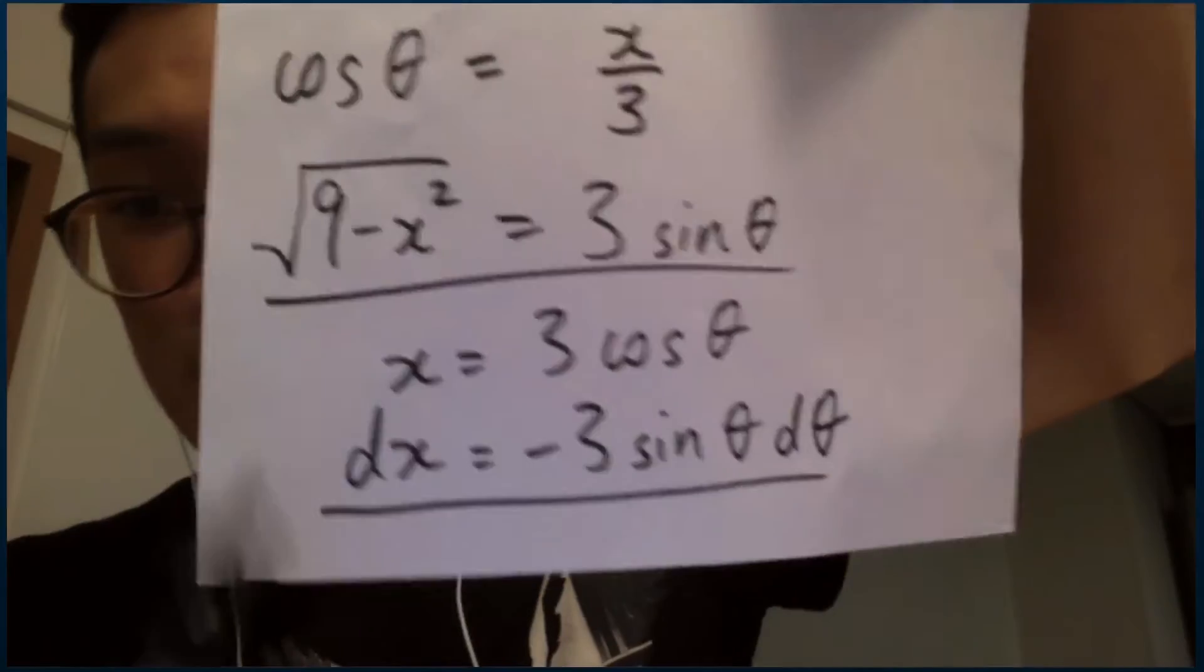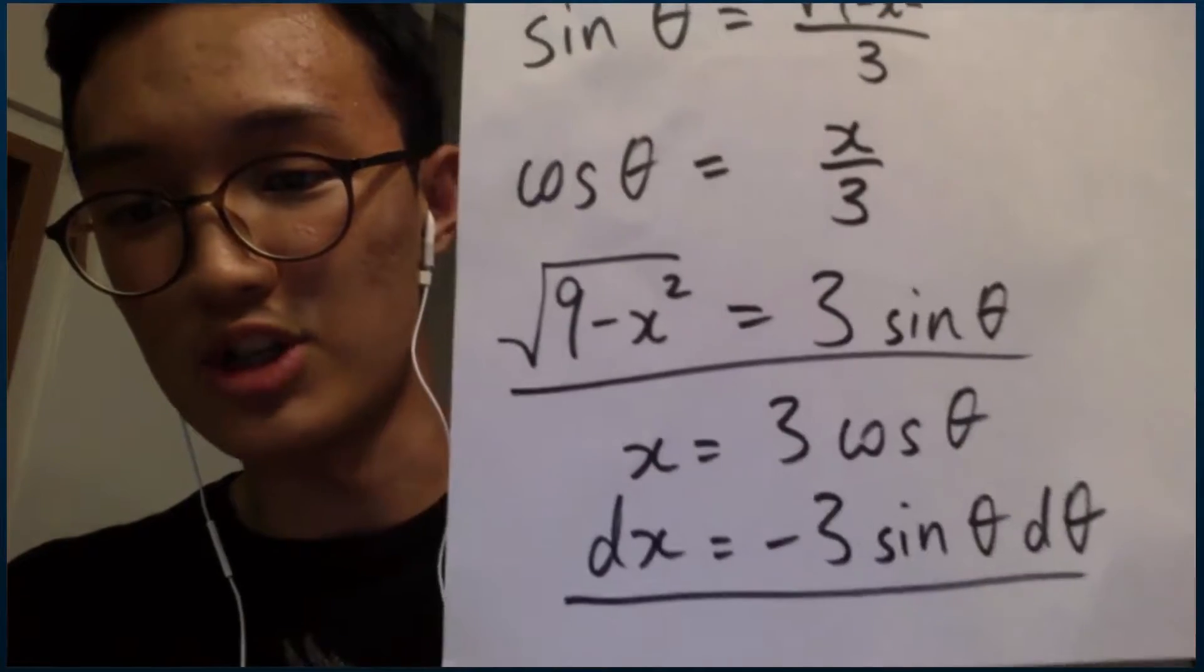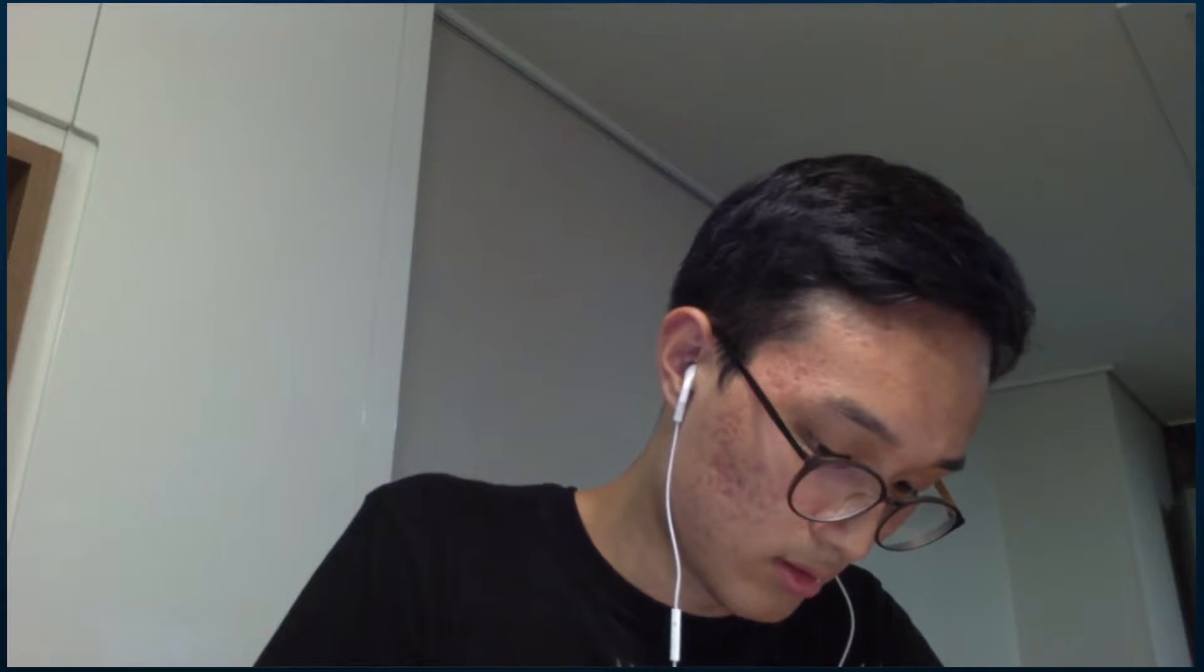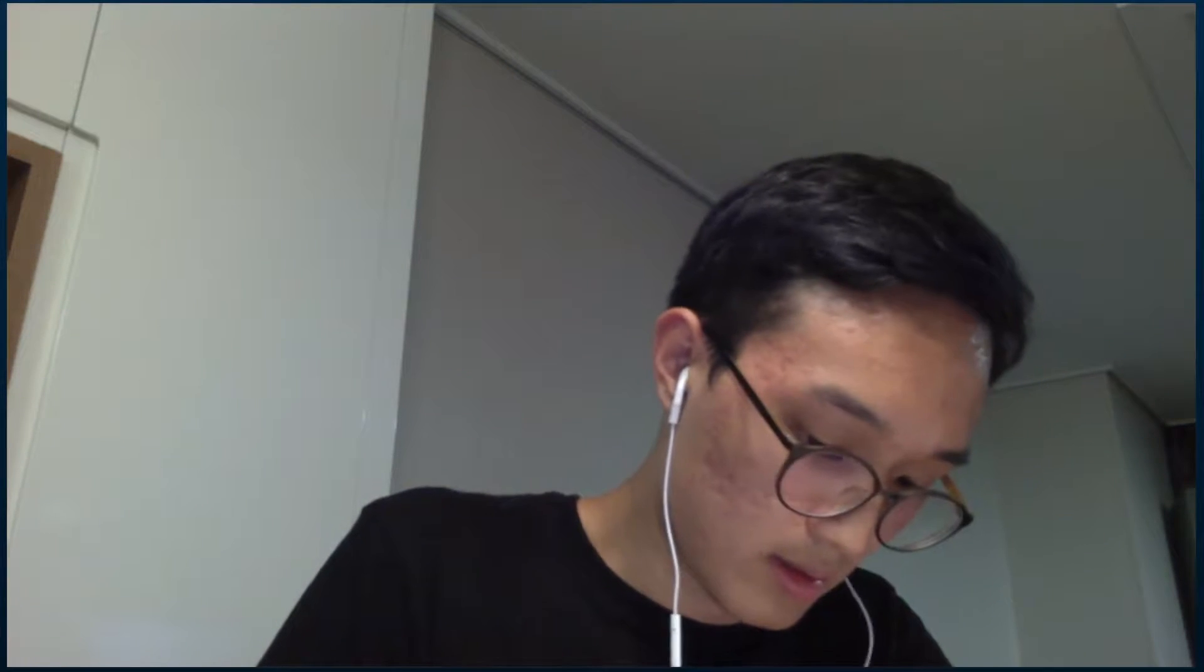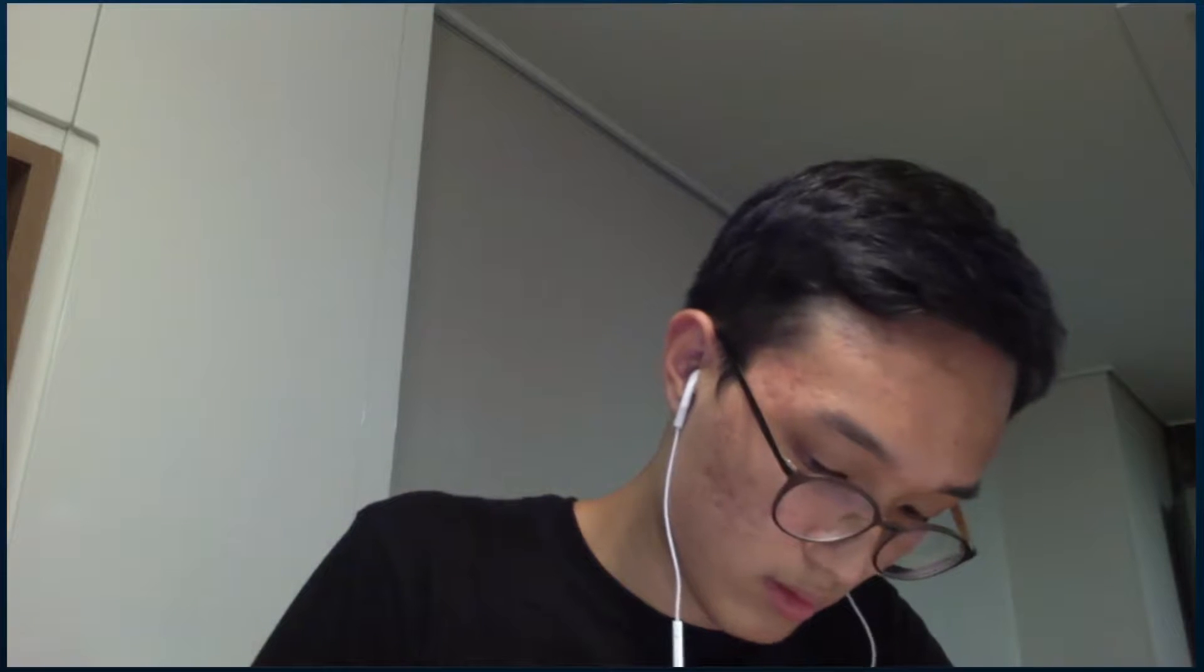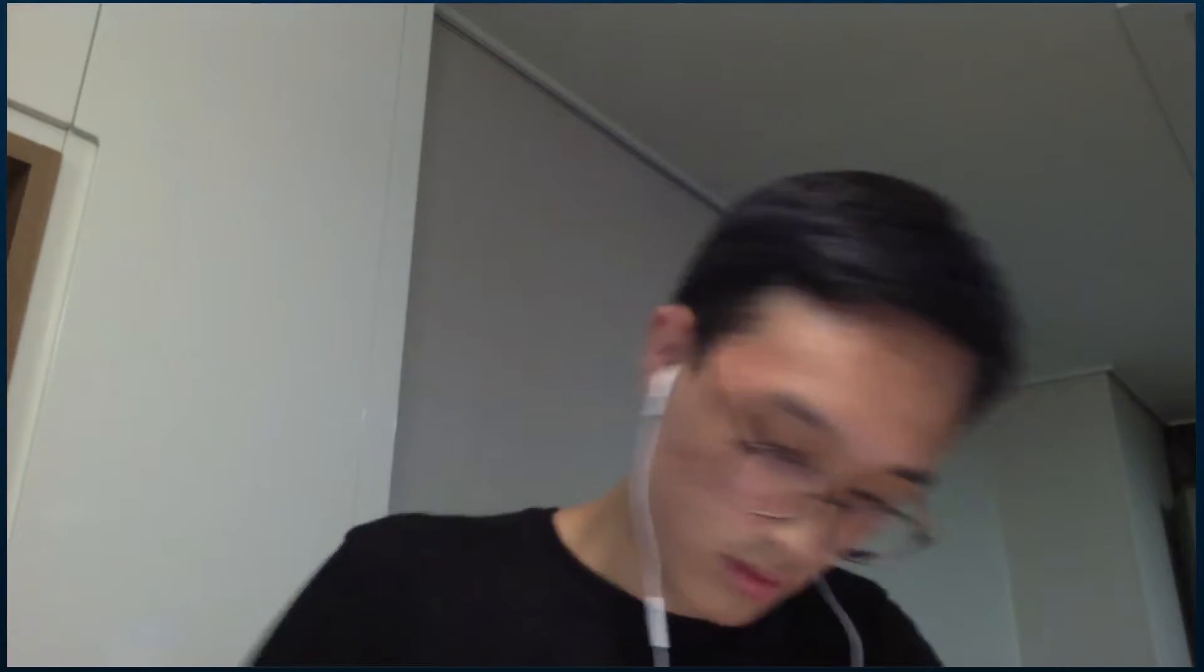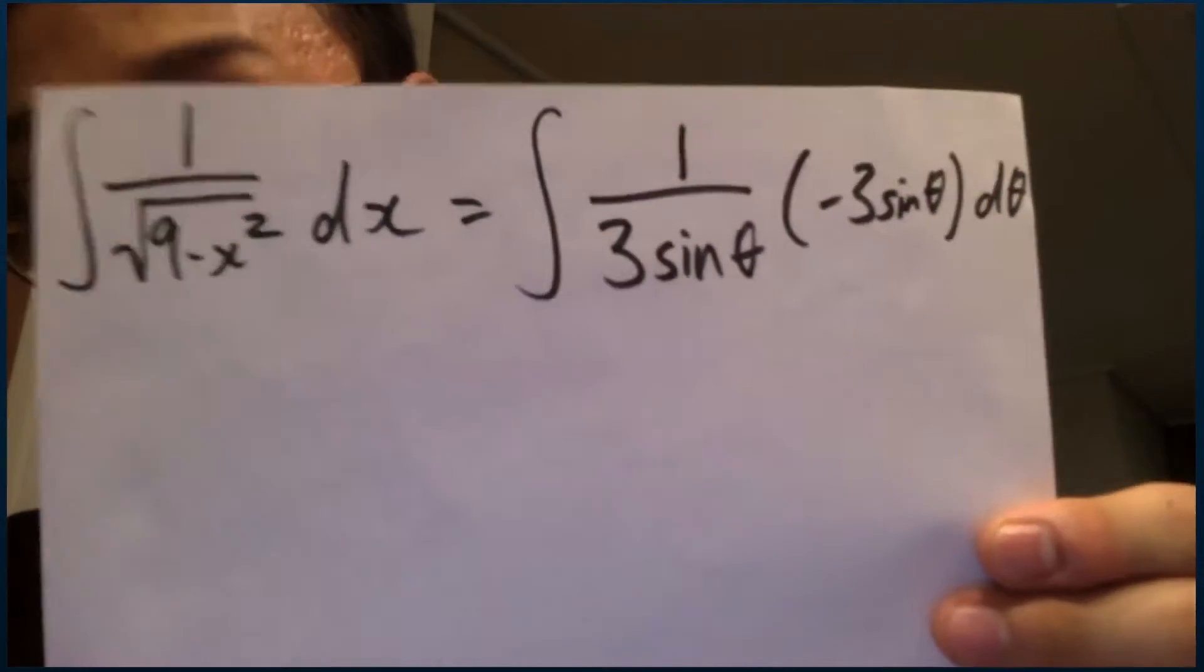So with these two expressions that are underlined, we can just substitute them directly into this integral up here to get a much easier integral. And the easier integral is going to look something like this, where we have sines and cosines instead of difficult square roots. So we will get the following integral expression on the right side, and the integral on the right side is a lot easier to solve.